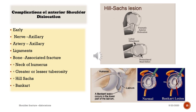When the shoulder is anteriorly dislocated, the Hill-Sachs lesion exists on the posterior aspect of the humeral head. The Bankart lesion is an anterior inferior labral injury.